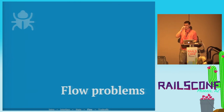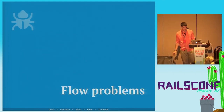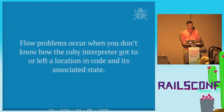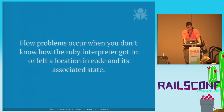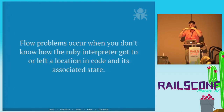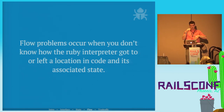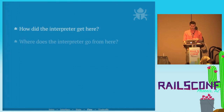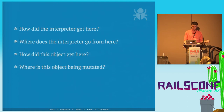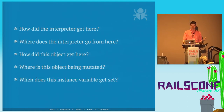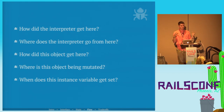Flow problems — our last class, and the most serious ones. These are the ones you hit in production, the ones that send you an email at 3 a.m. Flow problems occur when you don't know how the Ruby interpreter got to or left a location in code and its associated state. When you have an error and no idea what's going on, you need to know how it got there, where it's going, the objects and where they came from.